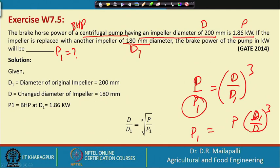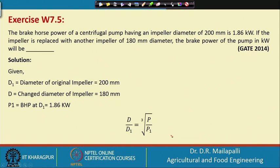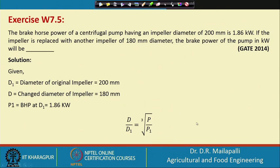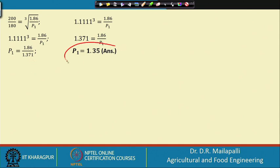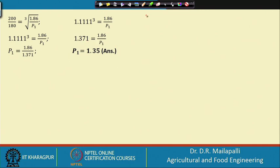Rearranging, P1 = P × (D1 / D)³. Substituting the given values, you finally get P1 = 1.35 kilowatts.